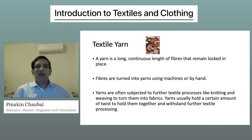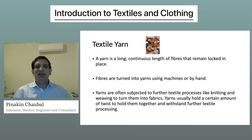Textile yarn. A yarn is a long continuous length of fibers that remain locked in place. Fibers are turned into yarns using machines or by hand. Yarns are often subjected to further textile processes like knitting and weaving to turn them into fabrics. Yarns usually hold a certain amount of twist to hold them together and withstand further textile processing.